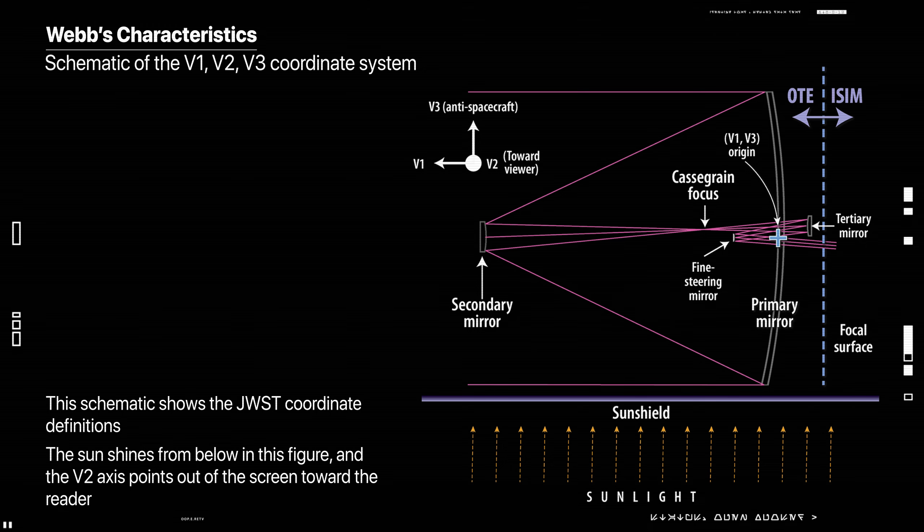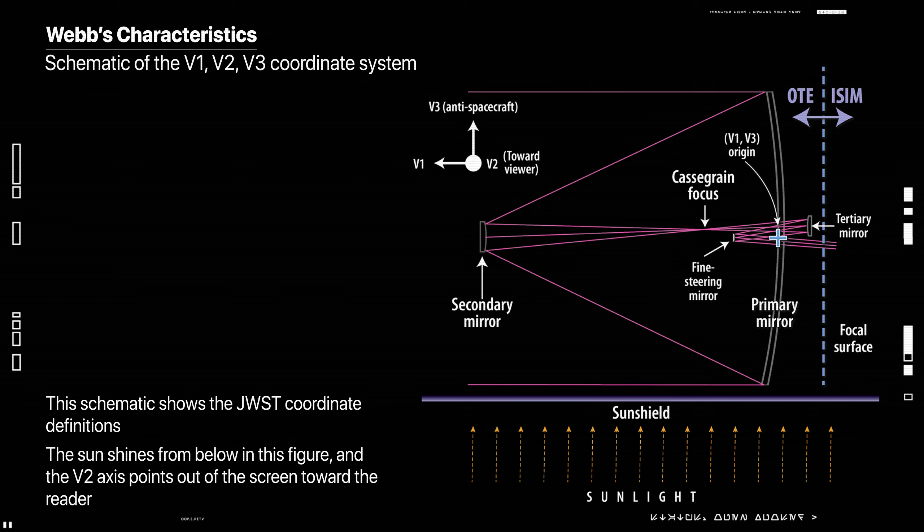The V3 axis, projection onto the sky, referenced eastward from north, is used within the diagnostics as an instrument-independent reference frame.